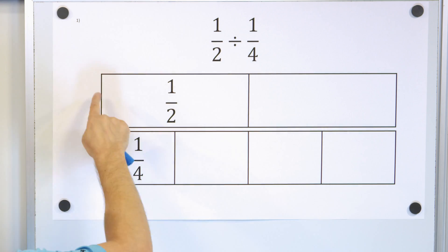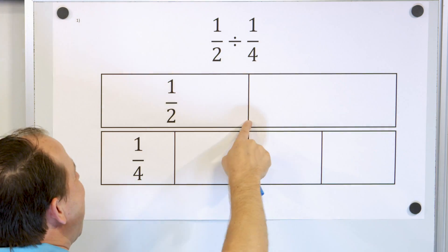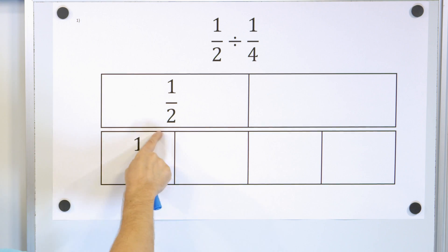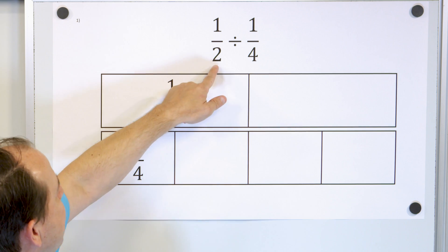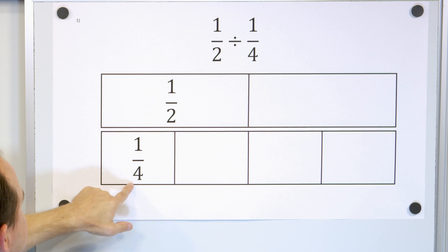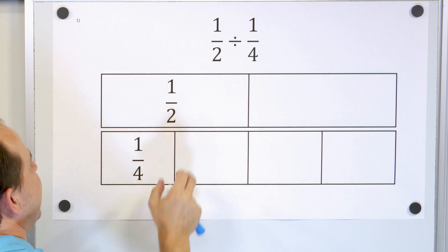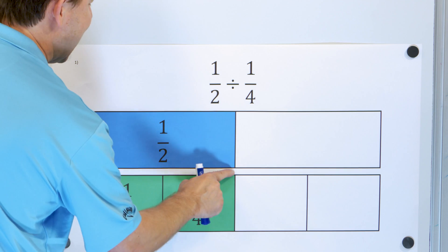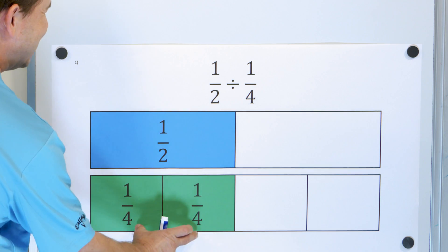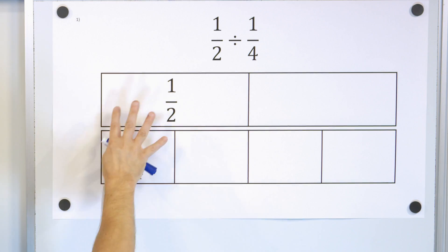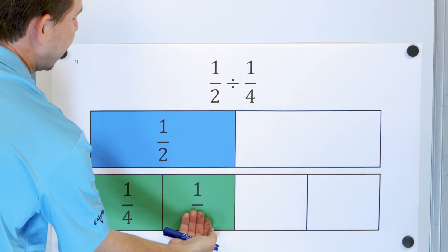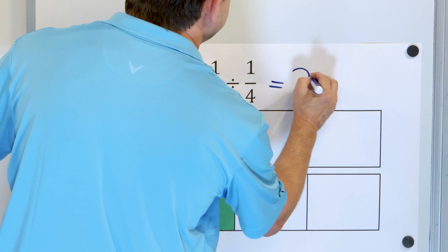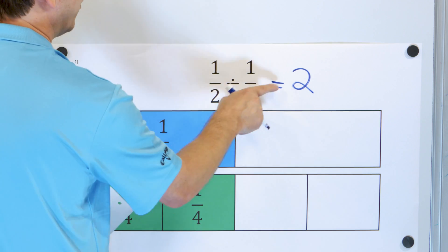We have the same problem: 1 half divided by 1 fourth. When we represent 1 half, we have a whole — like a candy bar — and 1 half is only this amount. And 1 fourth is what we're dividing by: take the same size candy bar, cut it into four equal pieces, and only have 1 fourth. So the first amount, 1 half, is this portion, and the second amount, 1 fourth, is this piece. We want to see how many times 1 fourth can fit into 1 half. Looking at the redrawn diagram, we can see that two of them fit exactly inside. So 1 fourth fits exactly two times.